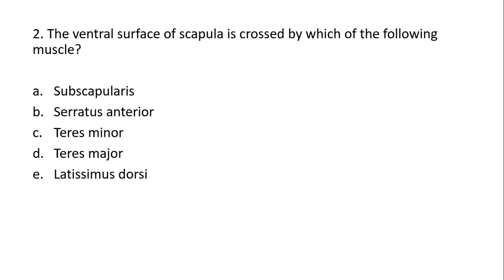The ventral surface of the scapula, as well as its two borders — the lateral border and the medial border — are relevant here. Option one is subscapularis, which gets attached into the subscapular fossa located on the ventral surface of the scapula. Option two is serratus anterior. Serratus anterior arises from the upper seven to eight ribs, their anterolateral surface, completely covers the anterolateral part of the thoracic wall, and gets attached over the margins of the medial border of the scapula on its ventral side.